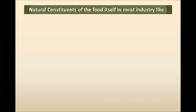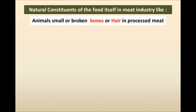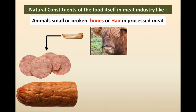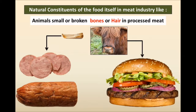Moving beyond fruits and vegetables, let's look at the meat industry. Natural constituents of food in the meat industry include small or broken animal bones, or hair in processed meat. For example, a bone may accidentally fall into processed meat during processing, and hair may accidentally fall into products like burgers. Finding hair while taking a bite of a burger sandwich is a very unpleasant issue for any consumer, so there must be controls.